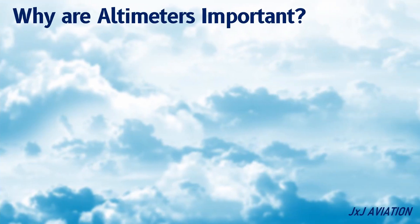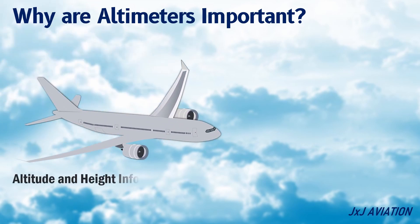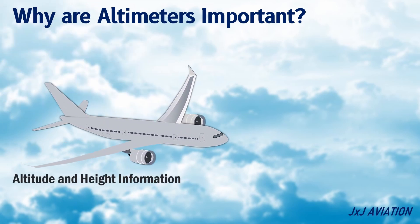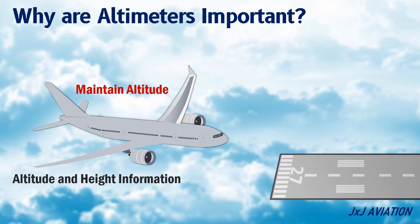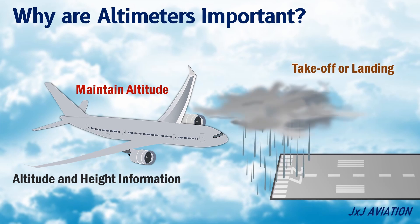Why are altimeters important? Altimeters provide altitude and height information to the pilots and the onboard computers. This is important because normally an aircraft would be asked to maintain a particular altitude. The altimeters indicate the altitude at which an aircraft is currently flying, which is crucial for safe operations since there could be other aircraft flying at different altitudes. A radio altimeter gives a very accurate indication of an aircraft's height when the aircraft is close to the ground, which is required during takeoff or landing, especially in poor weather conditions where visibility is low. The readings make it easy to understand whether the aircraft is climbing or descending at the correct rate.